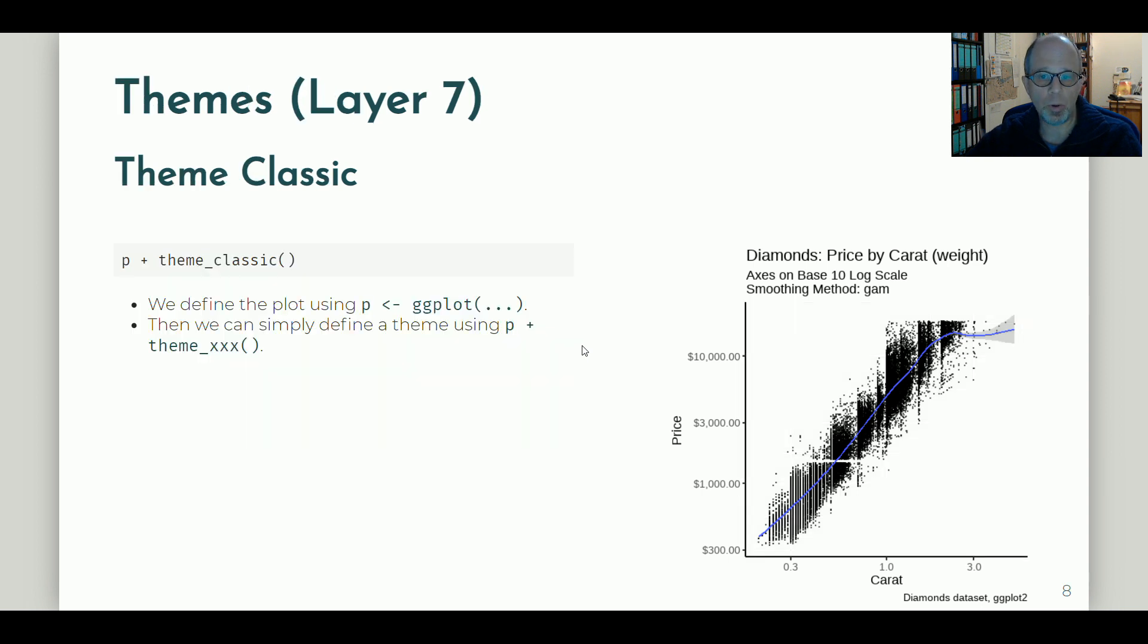The last layer that I want to talk about is the themes layer, the seventh layer. Now I don't repeat the full plotting code, but instead I assign the plotting code to an object here, just called p for convenience. Then I can play around with themes, just adding the theme function, p plus theme_classic in this case. Theme_classic is part of ggplot2.